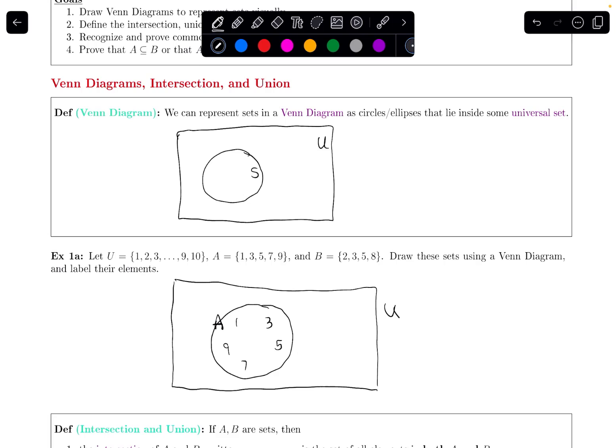We also have this set B, but I notice that B has a couple of elements that are common to the two sets. Like B has the element 3 and 5, and 3 and 5 are in A as well. So when I draw a circle for B, let's make it overlap A so that it also contains the 3 and the 5. So this will be the B.